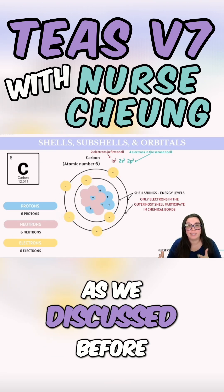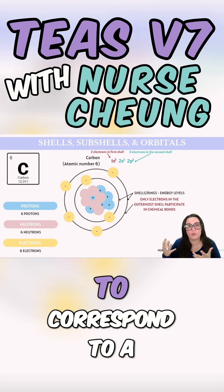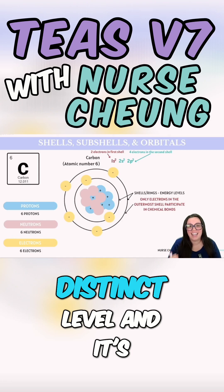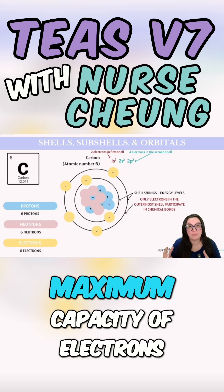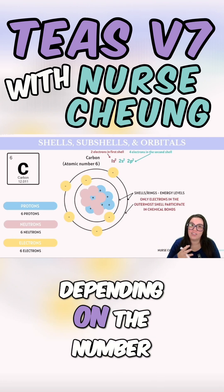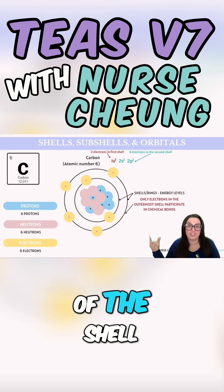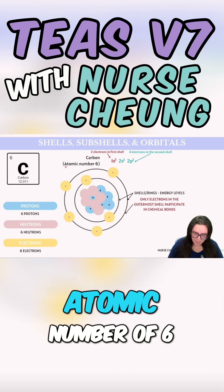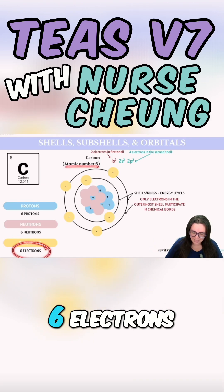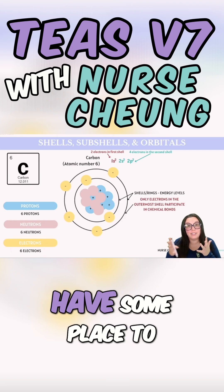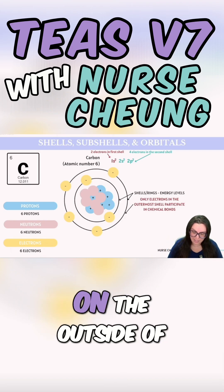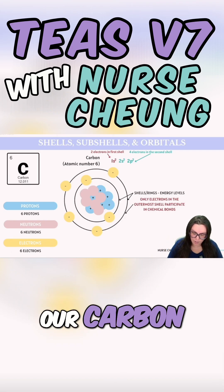As we discussed before, each shell corresponds to a distinct energy level and has a maximum capacity of electrons depending on the number of the shell. Carbon has an atomic number of six, which means we have six electrons that we need to place on the outside of our carbon atom.